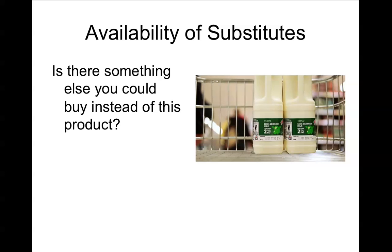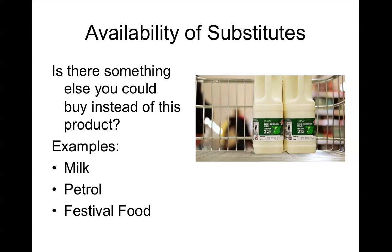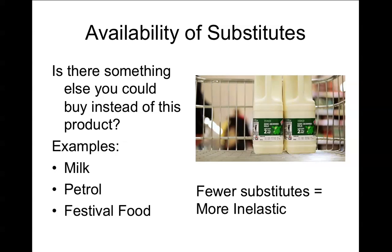First, availability of substitutes — is there something else you could buy instead of this product? The best example is milk. If you're going to put something on your cereal, unless you want almond milk or soya milk, there's only one thing you can use. So milk is probably going to be more inelastic because there are so few substitutes. Other examples include petrol — not very many things you can substitute — and festival food, where you can't leave to eat elsewhere, which is why festival food is so expensive. The rule is: the fewer substitutes, the more inelastic the product.